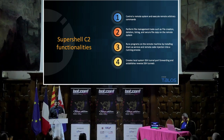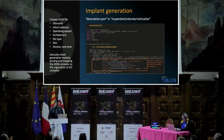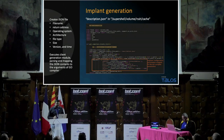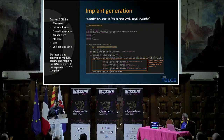Now we'll see how the operator can generate the implants — the implant generation mechanism. An operator using this C2 from the front end can specify details about the file name, a return address, operating system, and architecture, along with file type, size, and version. Once entered, it creates a JSON file that is placed in the SuperShell C2 directory.